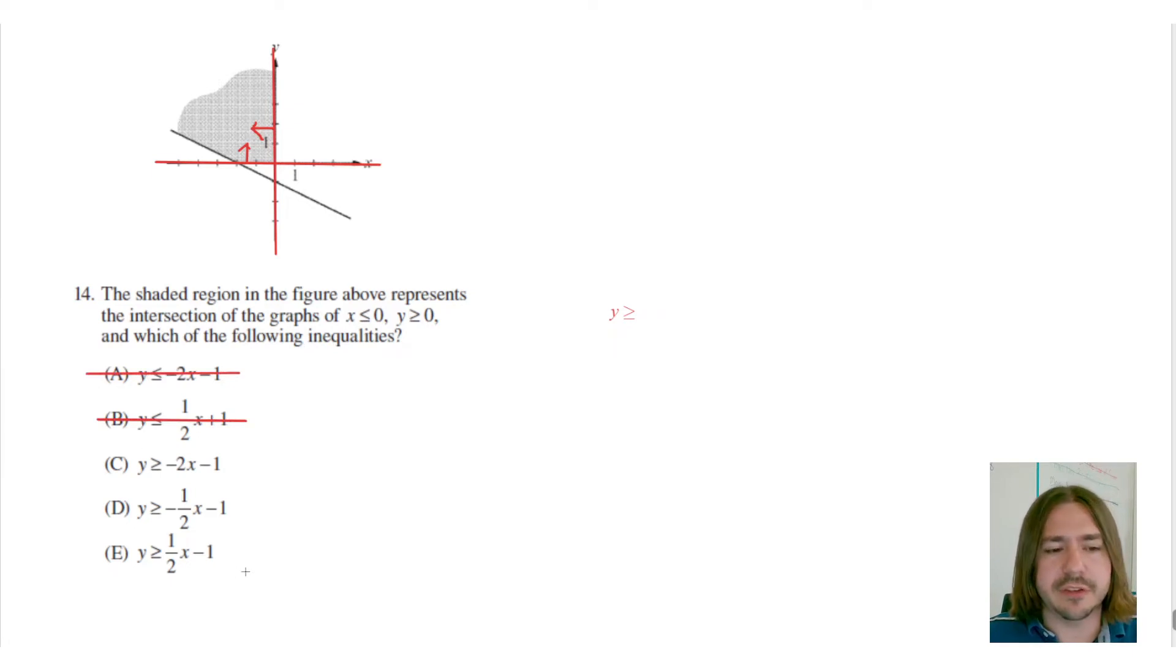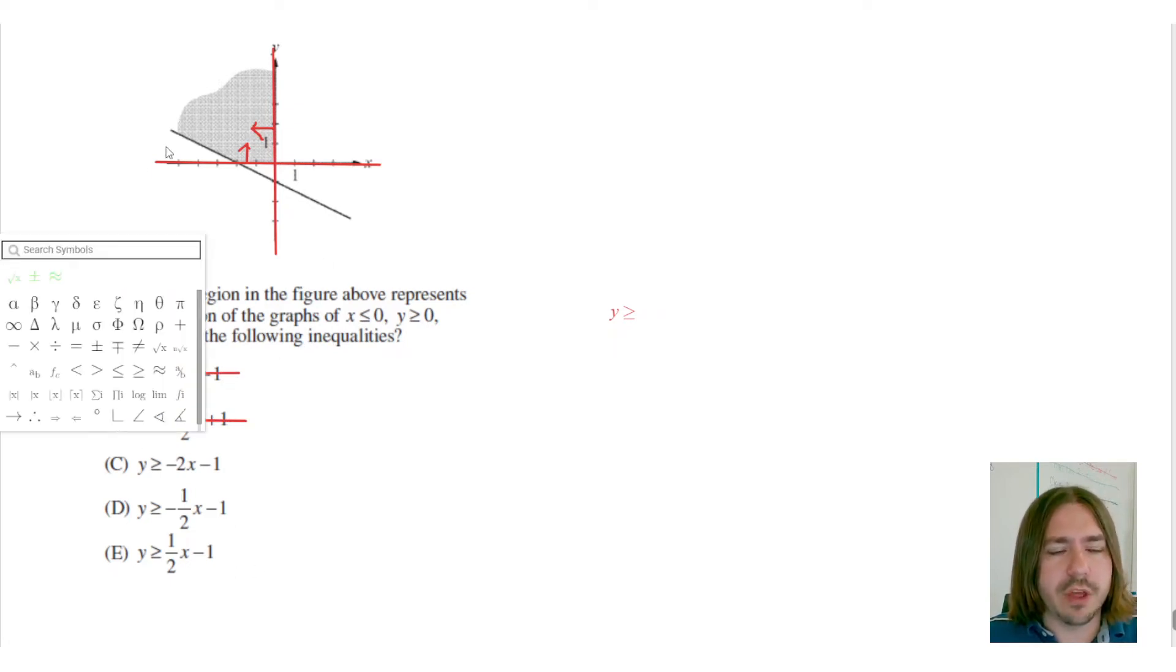So it's got to be either C, D, or E. So the next thing I can do is try to come up with what the equation for this line is. I notice first that the y-intercept is negative one, and since that's clearly defined I'm going to use this format, y equals mx plus b, to help me write the equation.